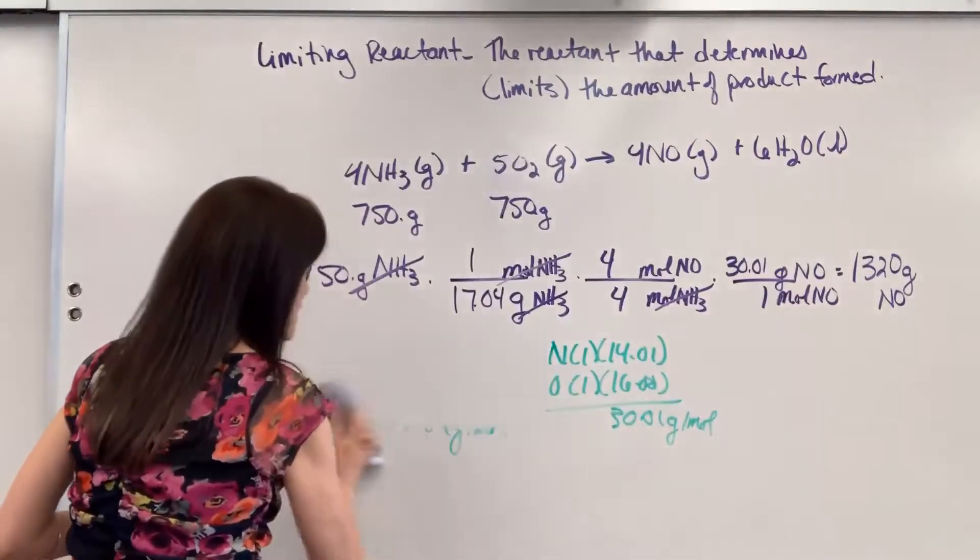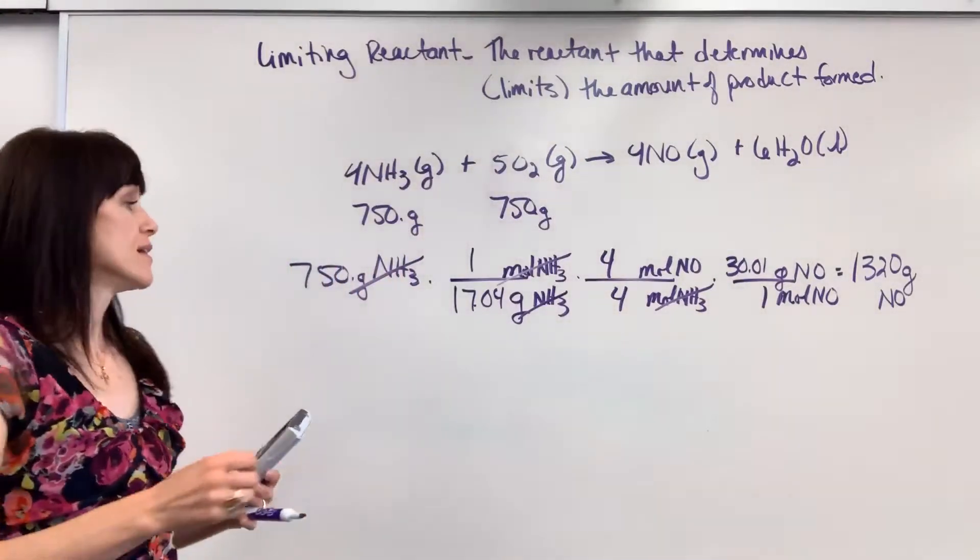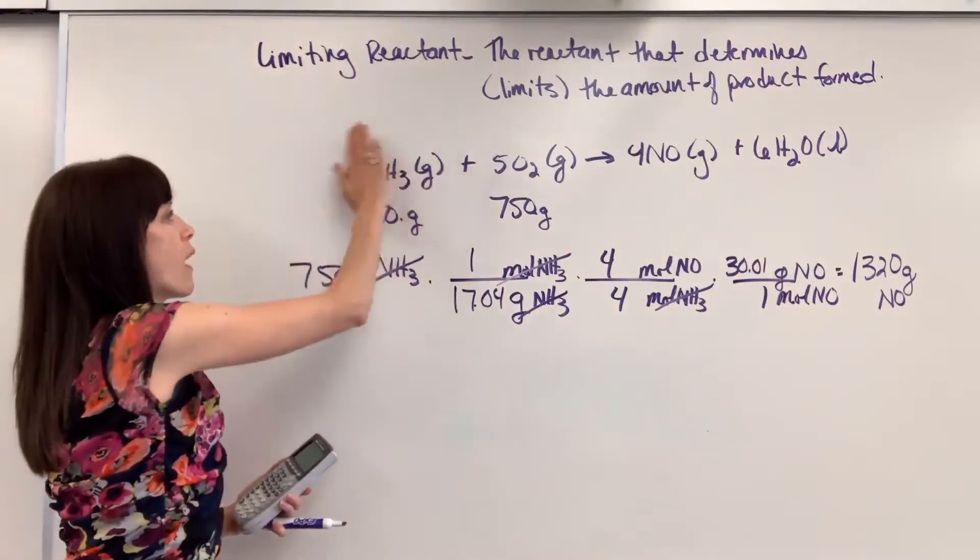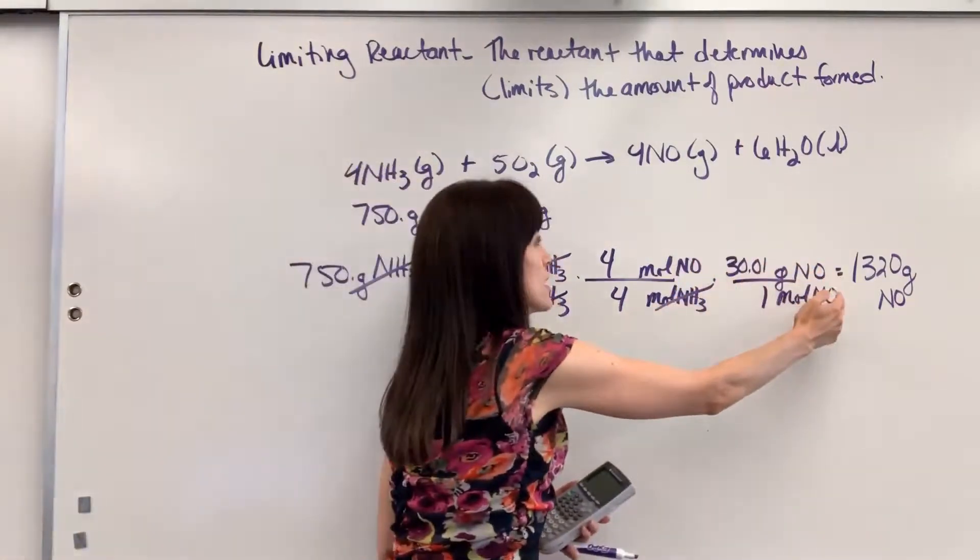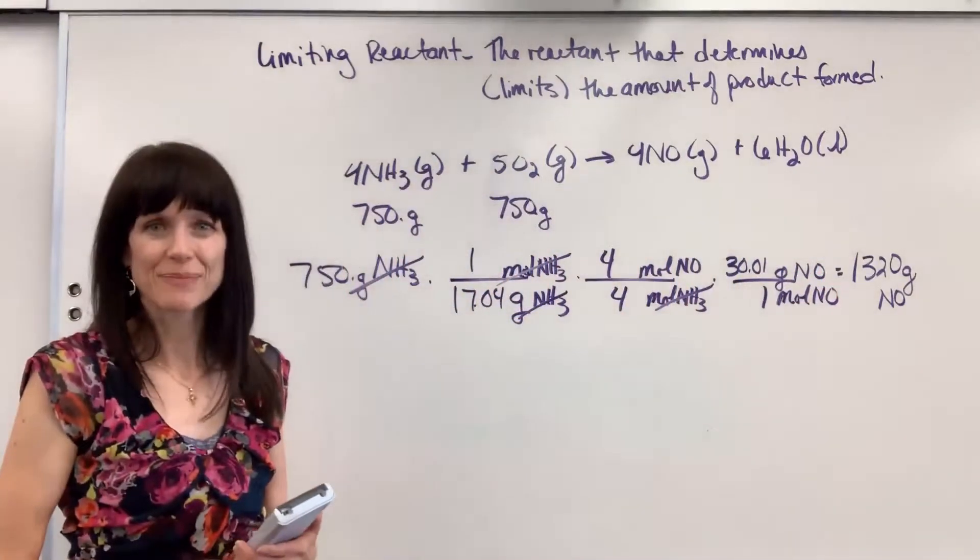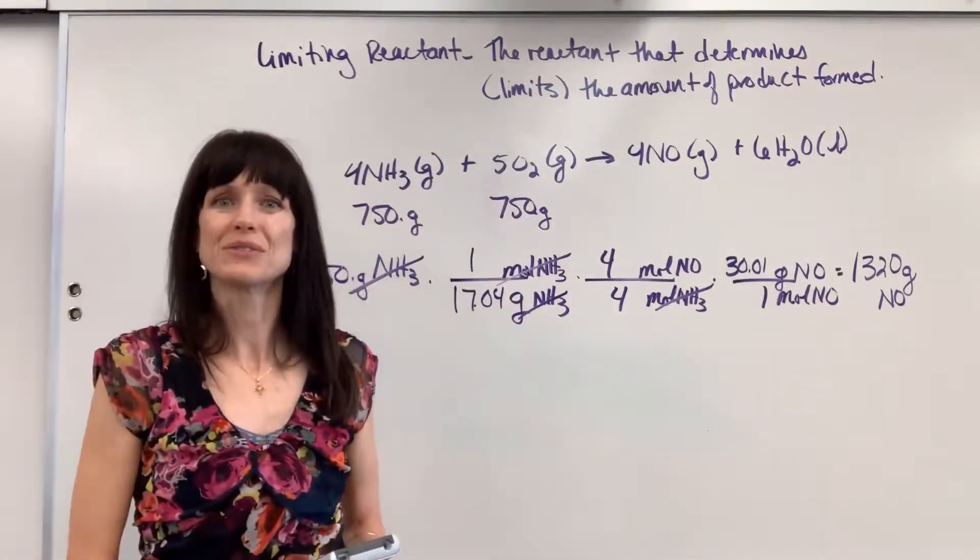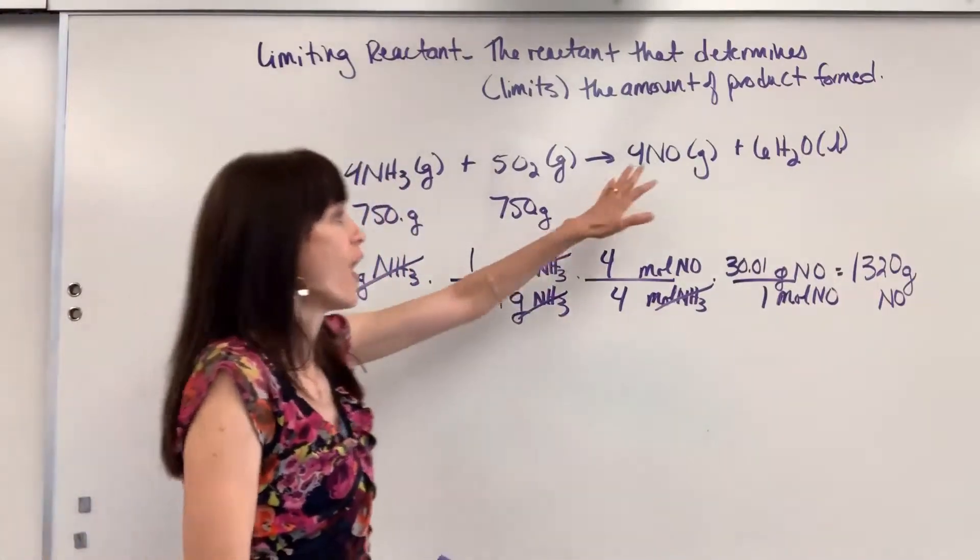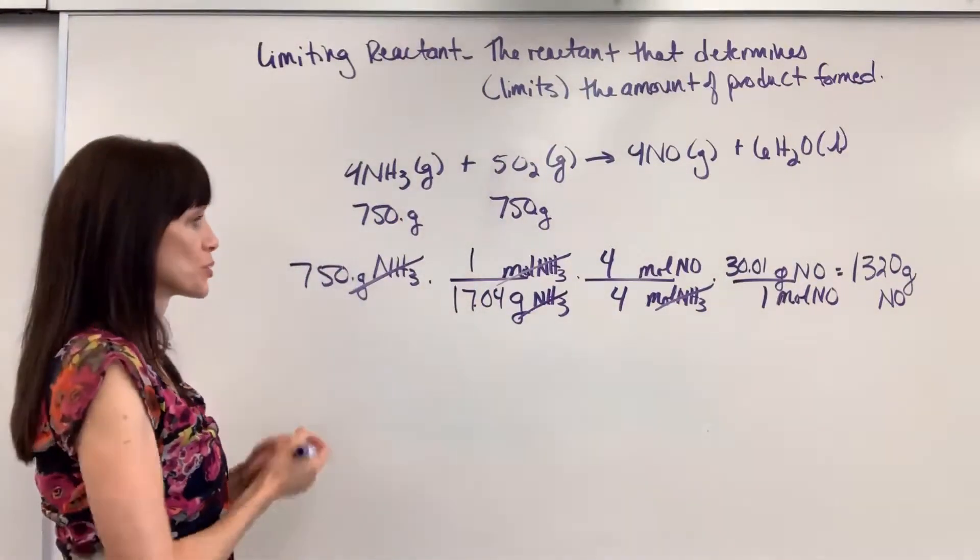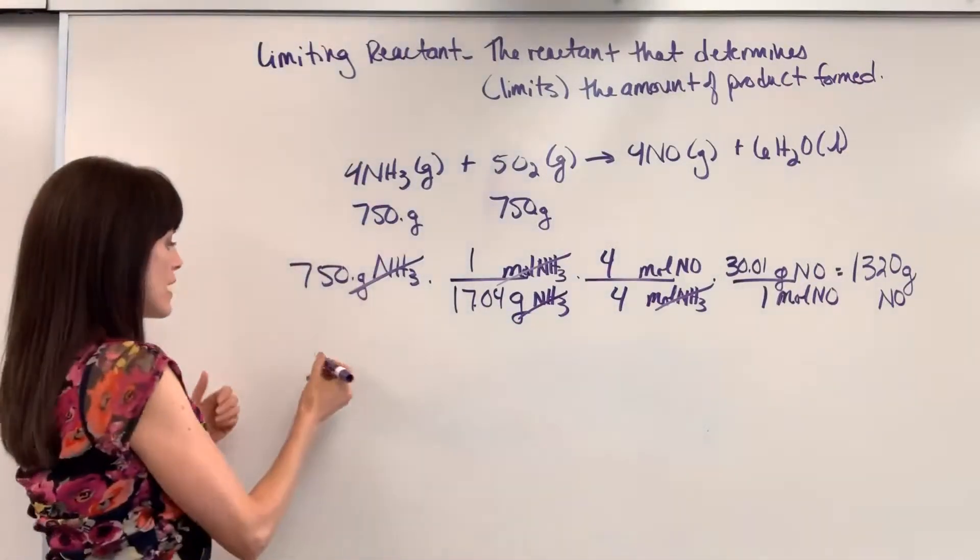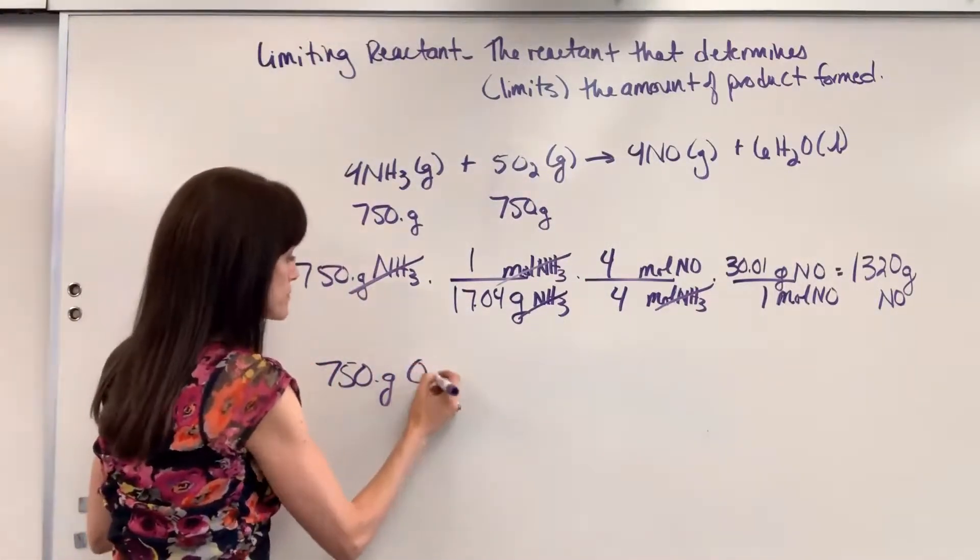I'm going to do it to three significant figures. 1,320 grams of nitrogen monoxide. So think about what we just found. If we step away from all these numbers, what did we just find? If we consume all 750 grams of ammonia, it will produce 1,320 grams of that nitrogen monoxide. So now we're going to go to that second question. Well, what if we consume all 750 grams of the oxygen? How much nitrogen monoxide will be produced?